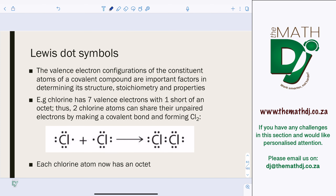Lewis dot symbols: the valence electron configuration of the constituent atoms of a covalent compound are important factors in determining the structure, stoichiometry, and properties of the compound. The electron configuration — how electrons are shared between the two atoms — determines how the compound reacts with others.